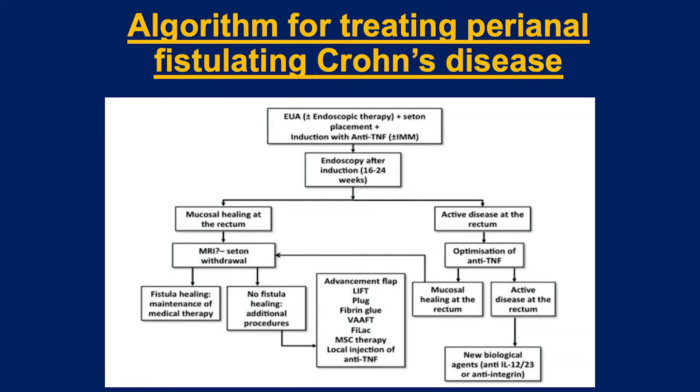For patients who don't achieve healing, are there alternatives to seton placement? There are various complex fistula management options available. It's probably important to note that if there are multiple different treatments for a condition, it implies none of them are particularly effective. Complex operations include ligation of the intersphincteric fistula tract, where we tie off the fistula tract and close the mucosa within the rectum, with a quoted success rate of about 66% in patients without Crohn's — unfortunately lower in those who have it. Video-assisted approaches are also available but are more effective in individuals without inflammatory bowel disease. It's a very difficult condition to manage.